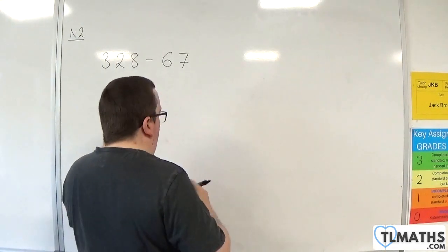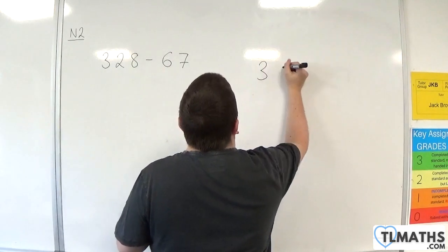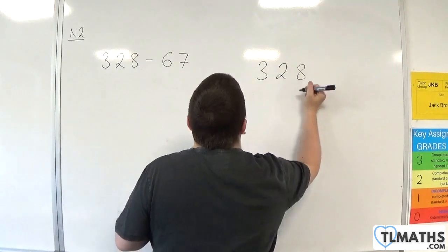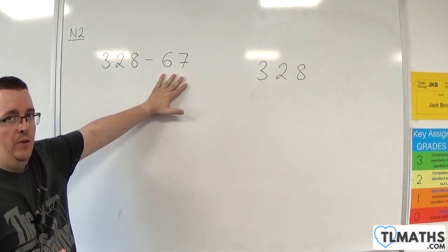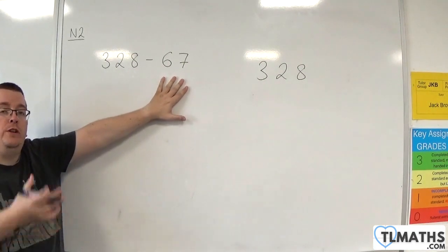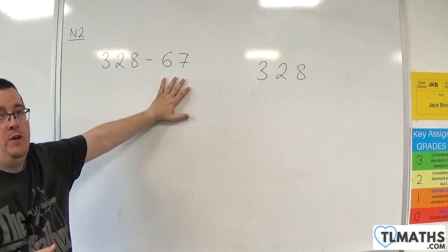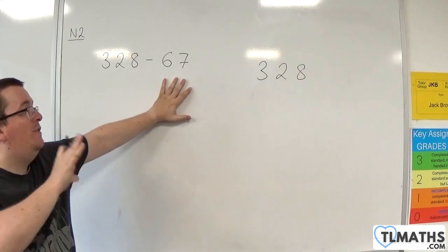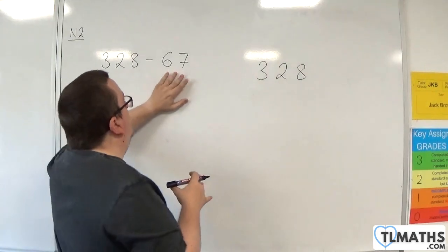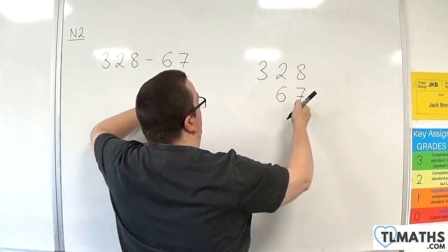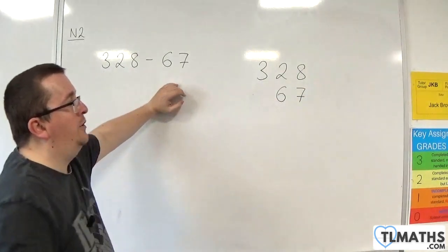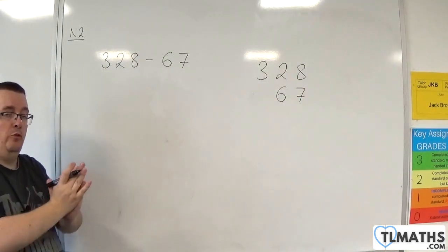The layout is very similar to how we did addition. So 328 and then whatever you're taking away has to go on the bottom. Unlike when we were doing addition, it didn't really matter which one you put top and bottom, here it does. So whatever number you are subtracting must go on the bottom. You must make sure that the units and tens columns match up as they do here.